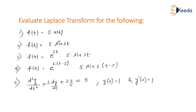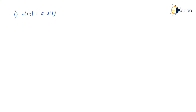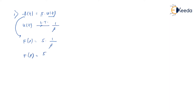Let us start with f of t equal to 5 times u of t. We know that u of t is a unit step signal, and for a unit step signal the Laplace transform is 1 by s. Since 5 is a constant, it comes out, and u of t has Laplace transform 1/s. Therefore, F of s is simply 5 upon s — that is the final answer for 5 times u of t.